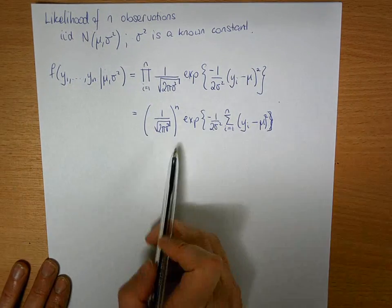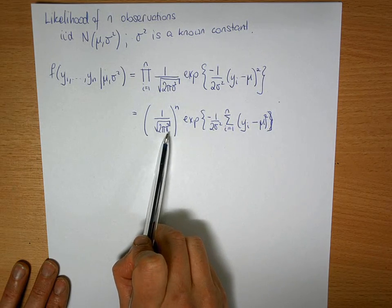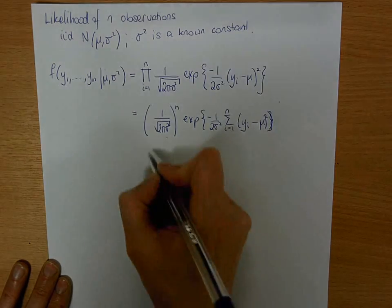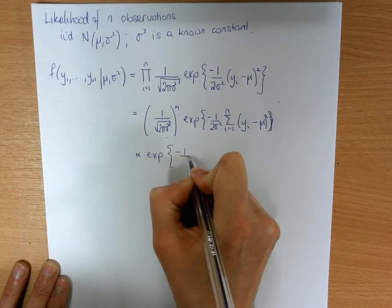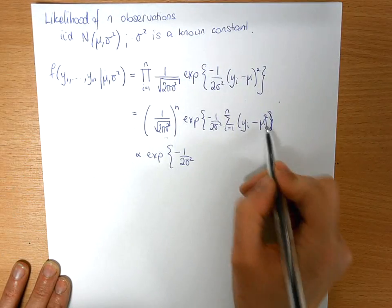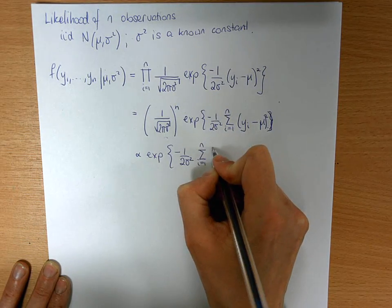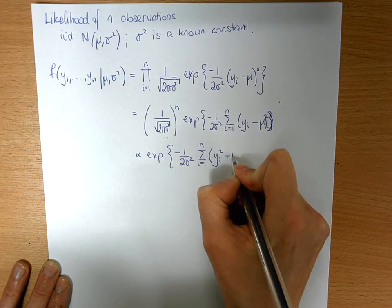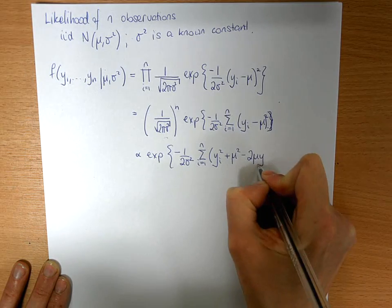At this point we're going to start ignoring here. This is 2 is a constant, pi is a constant, and sigma squared is a known constant, so we're not going to worry about it. We're going to say it's proportional to exponential of minus 1 over 2 sigma squared, and we're going to expand out these brackets: the sum i equals 1 to n of yi squared plus mu squared minus 2 mu yi.